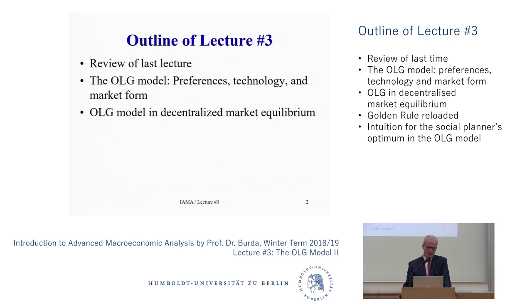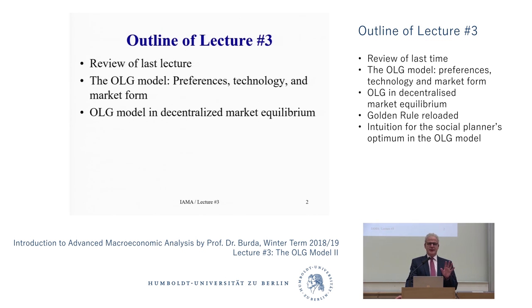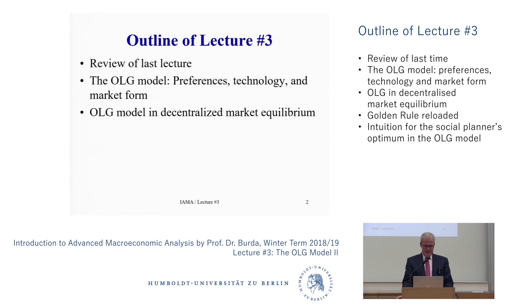We'll move on to describe a market equilibrium in which generations interact with each other. That's the whole point of calling it an overlapping generations model — to show that there is heterogeneity. This is not a representative agent model. At any point in time, there are two generations alive with economic interests in trading with each other: an old generation and a young generation. The relative weights of those two generations at any point in time can change, and that is fundamental to understanding the appeal of this model.